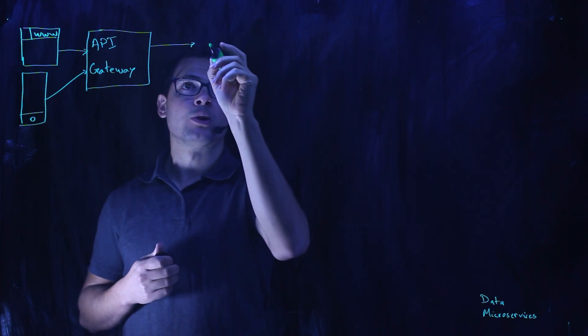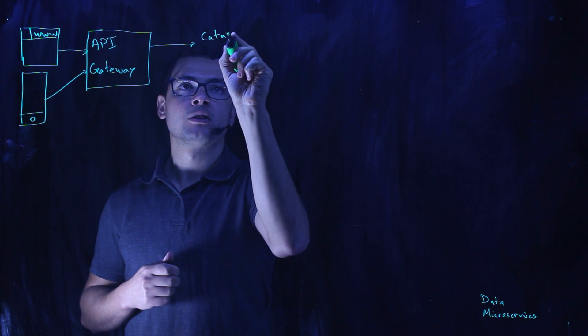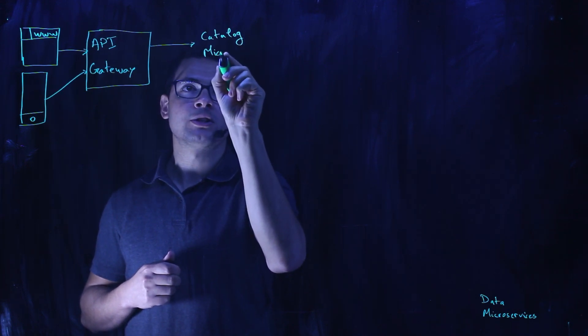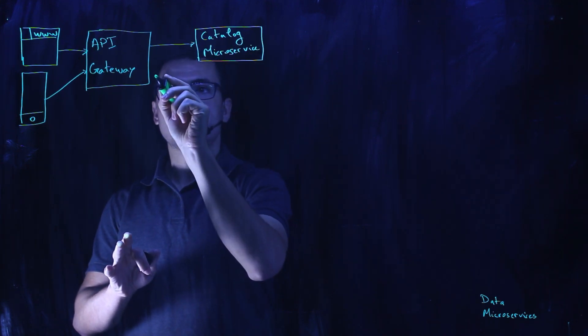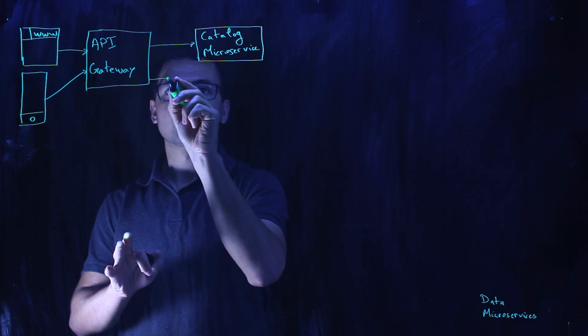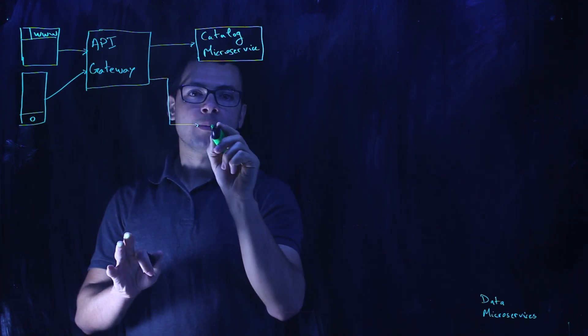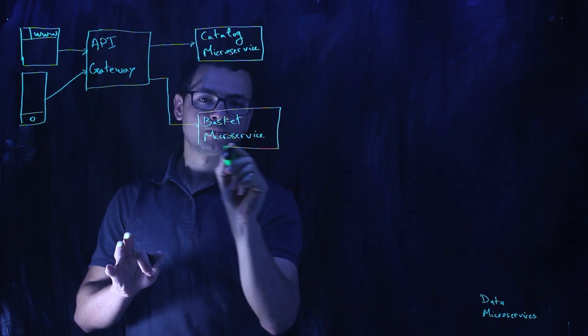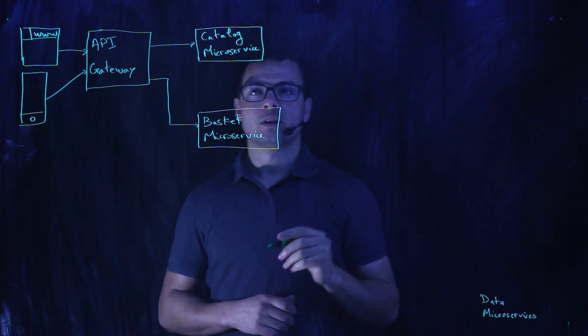The API Gateway has access to all of the microservices in the system — for example, the catalog microservice and the basket microservice. Each microservice will own its own data. So the catalog microservice might have access to a SQL database, and the basket microservice would have access to another different database, which could be SQL or NoSQL. This is the typical architecture for a microservice application.